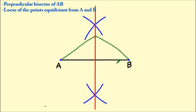Suppose we select this point. The distance of this point from A and B will be equal. Similarly, if I select a different point, the distances will be equal.